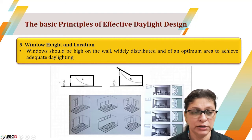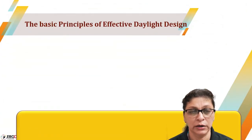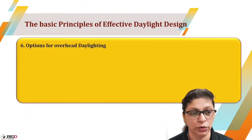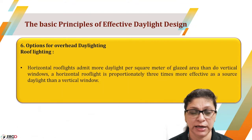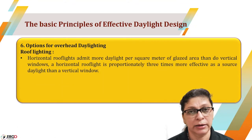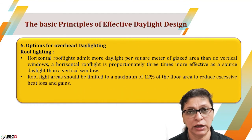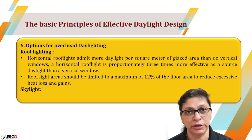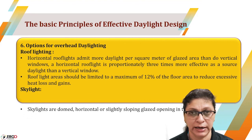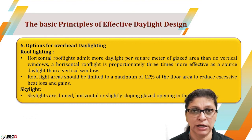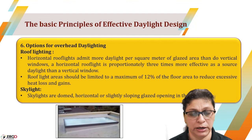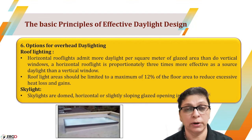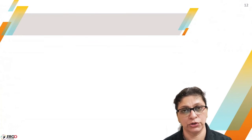There is also the option for overhead daylighting, also called roof lighting or skylighting. It is recommended that not more than 12 percent of the floor area has roof lighting installed. When they are dome-shaped or tapered, they are called skylights, and they help to maximize the daylight level of the building. In the next video we will be talking about daylighting controls and illuminance maps. Please keep watching. Thank you for joining.